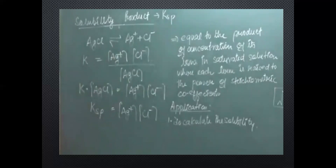We have taken solid silver chloride here. When we dissolve this solid silver chloride in water, it converts into aqueous form and then breaks down into its ions — that is Ag⁺ and Cl⁻.